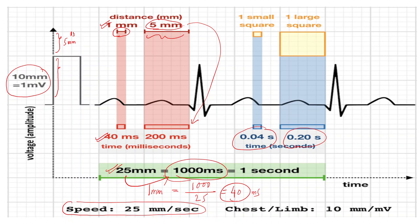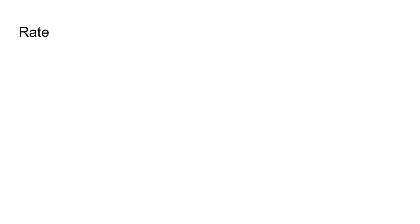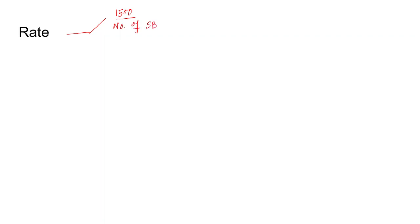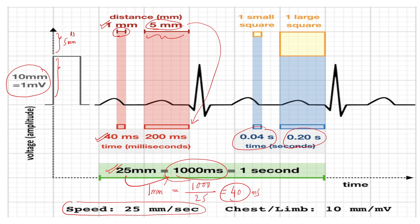Now if you understand this, we will see how to calculate the rate. To calculate the rate we need to remember two formulas. One is 1500 divided by number of small boxes between two consecutive R waves. Another formula is 300 divided by number of large boxes between two consecutive R waves. If you see the previous image, this is the R wave and this is the R wave — between these two R waves you count the boxes.